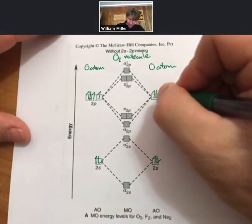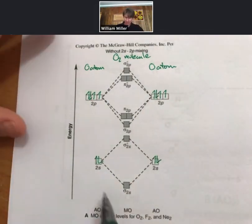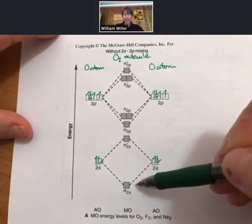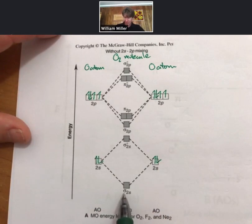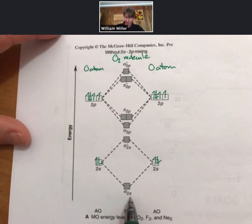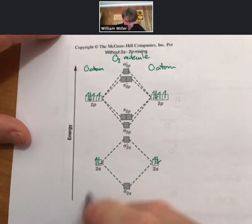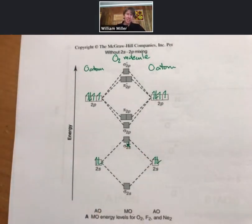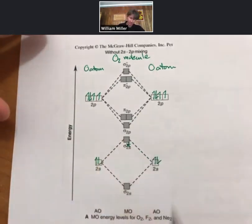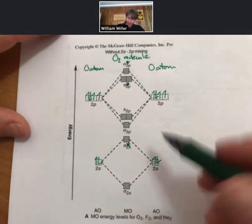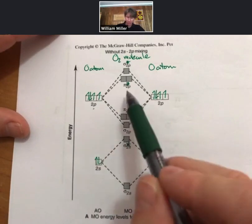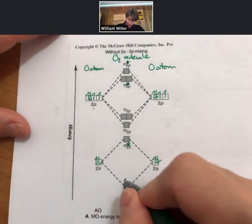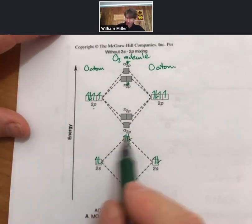These are the molecular orbital energy levels for O2, F2, and Ne2. There's a slightly different diagram for the other diatomics: carbon, nitrogen, and beryllium, but the process is the same. For oxygen it's 2s2, 2p4: one, two, three, four, same thing on the other side.